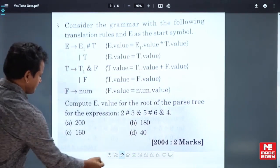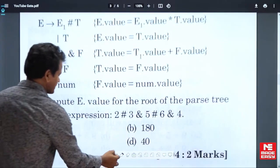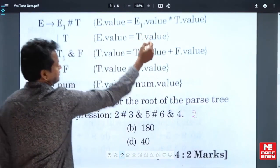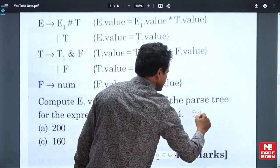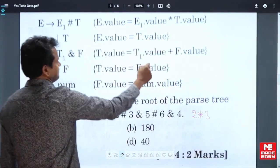First of all, just replace these operators. That is 2 hash means multiplication, 3 ampersand means it is plus. Wherever hash is there, I will write star. Wherever ampersand is, I will write plus.